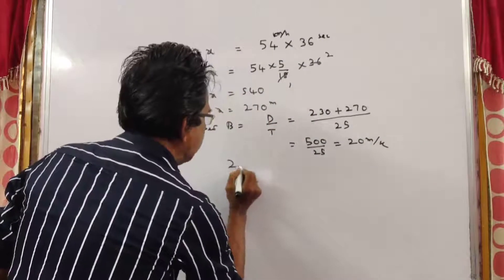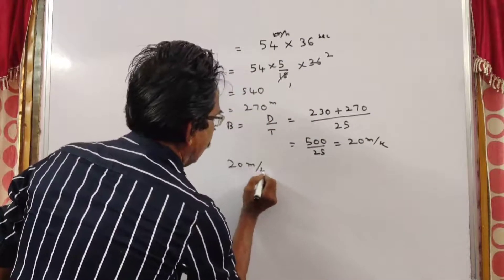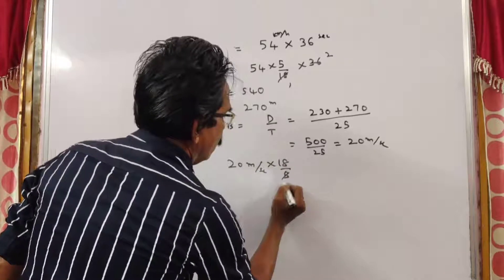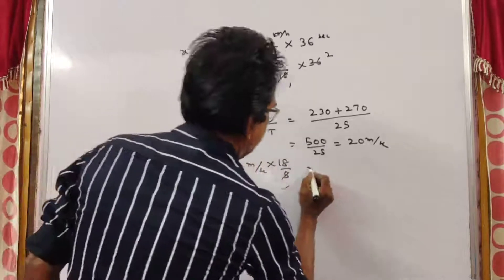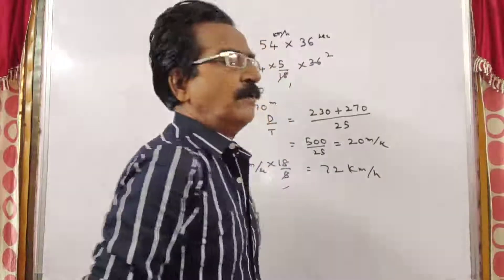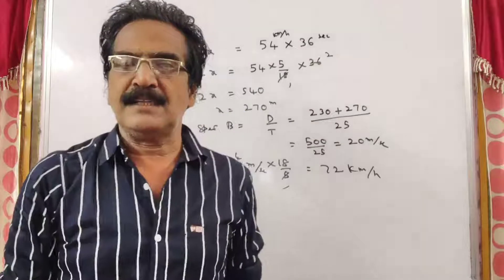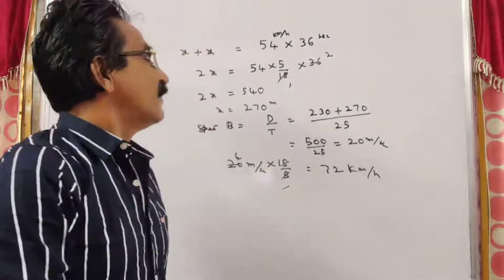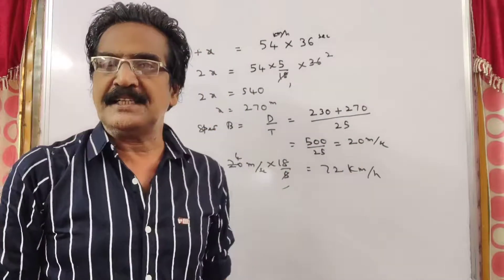20 meters per second, or multiply by 18 by 5... 72 kmph. So the speed of the train is 20 meters per second, or 72 kmph.